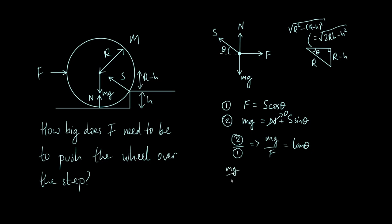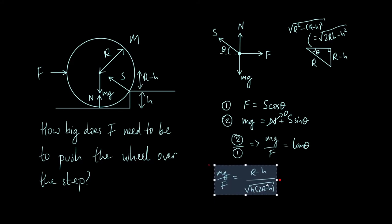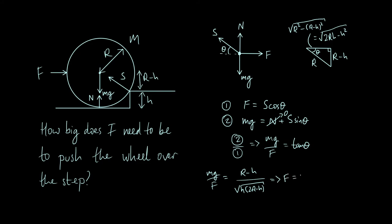So mg over F equals tan θ, which is the opposite side over the adjacent side relative to angle theta. The opposite side is r − h and the adjacent side is √(h(2r − h)). Rearranging, we get our final expression: F = mg × √(h(2r − h)) / (r − h). That is the minimum force we need to apply to push the wheel over the step.